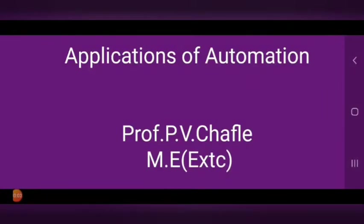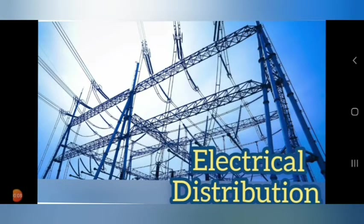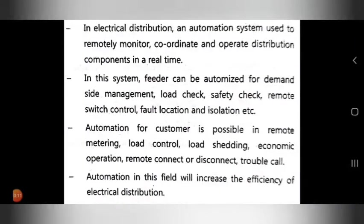Today we see the applications of automation. The first application is in electrical distribution. In this system, automation is used to remotely monitor, coordinate, and operate distribution components in real-time.